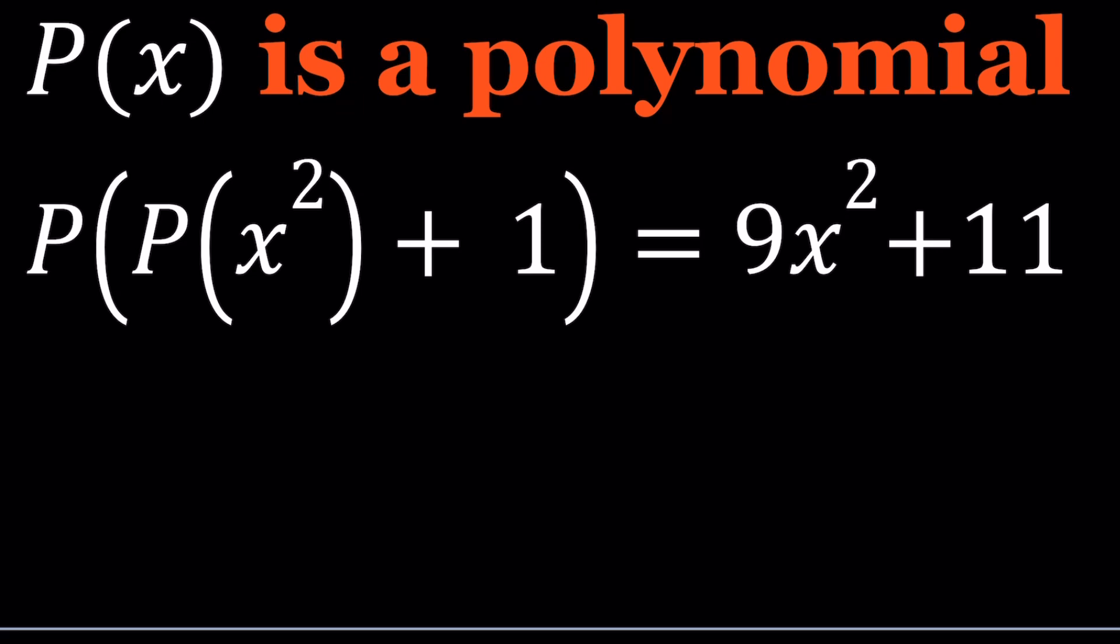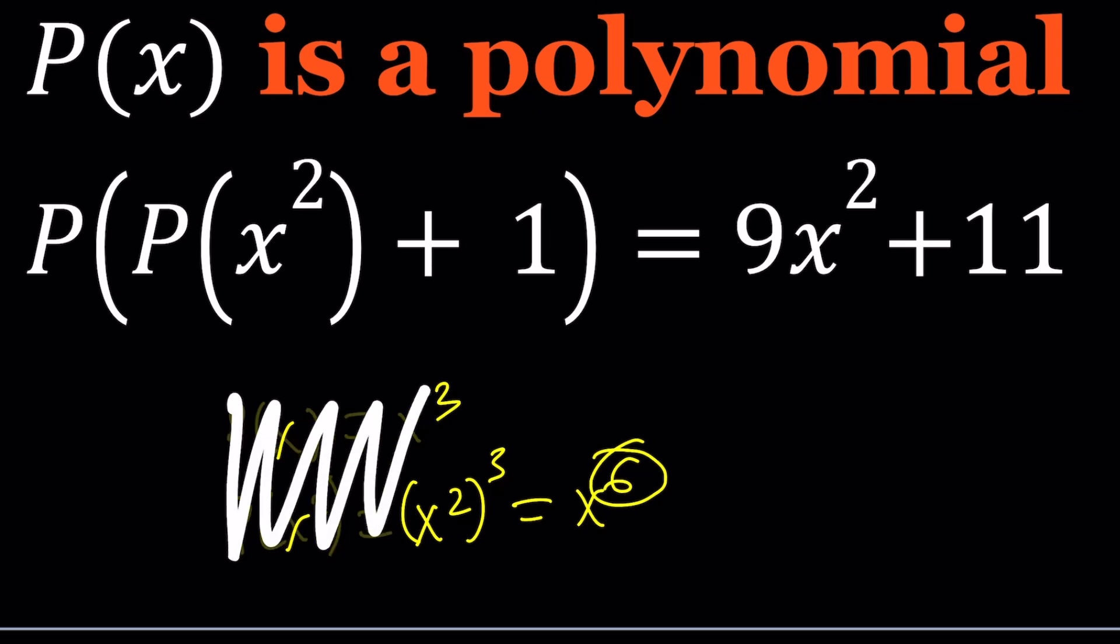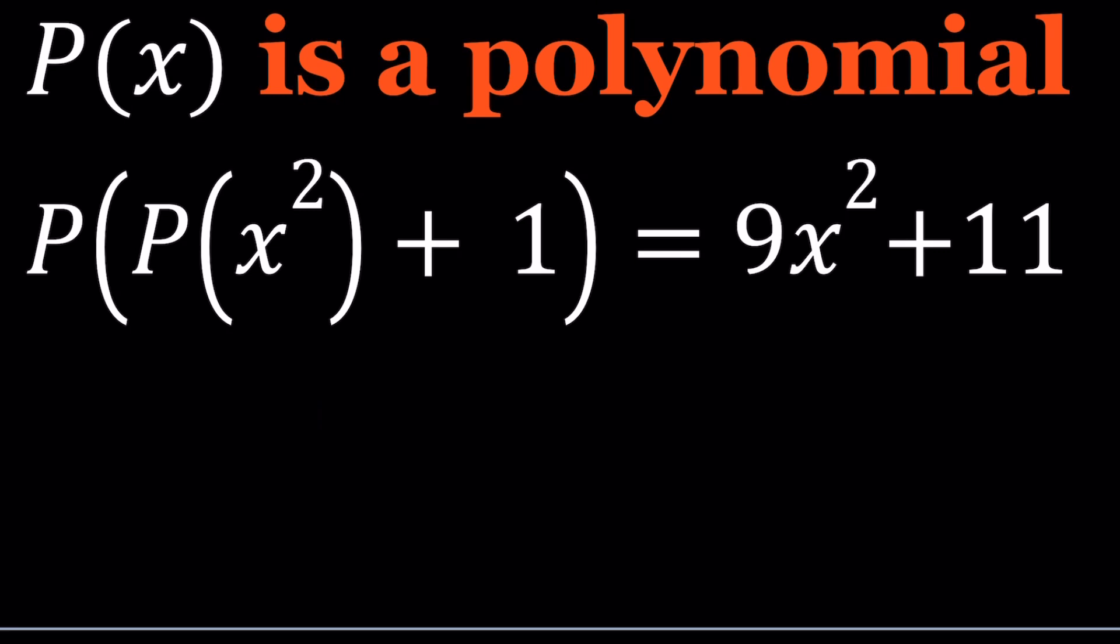If the degree of P of x is just n, the degree of P of x squared is just going to be doubled. Think about it. If P of x is x cubed, P of x squared is just going to be x squared to the third which is x to the sixth. It just doubles the degree. P of x cannot be a constant because if it's a constant, then P of a constant will be a constant, not a variable like this. So P of x at least has to be linear.